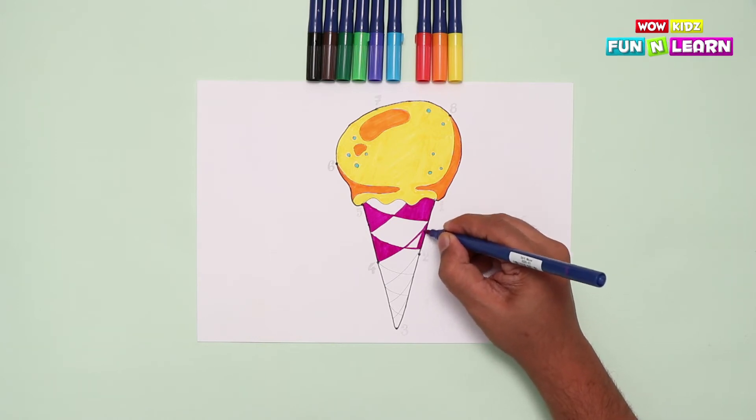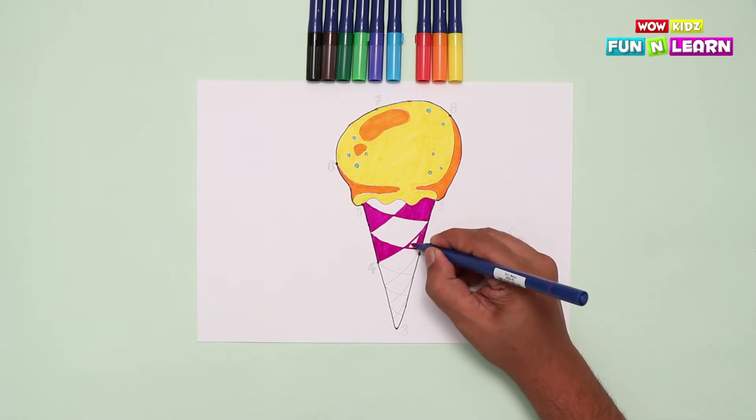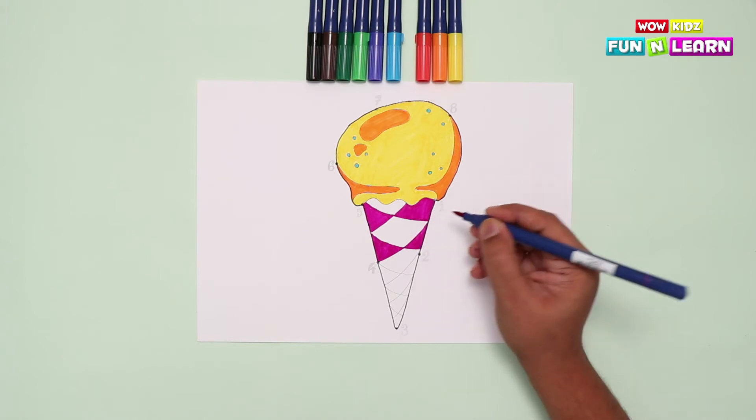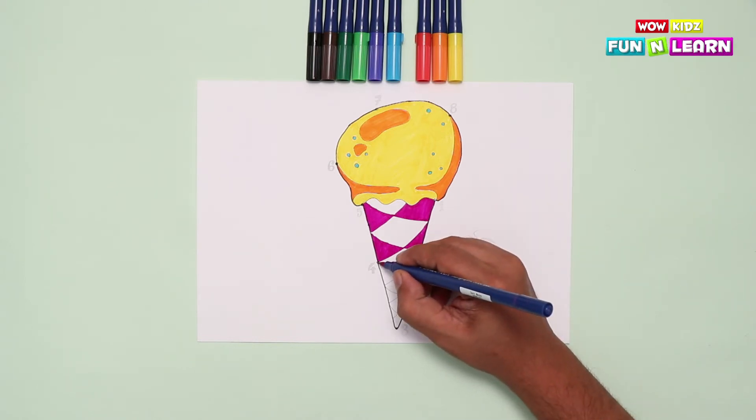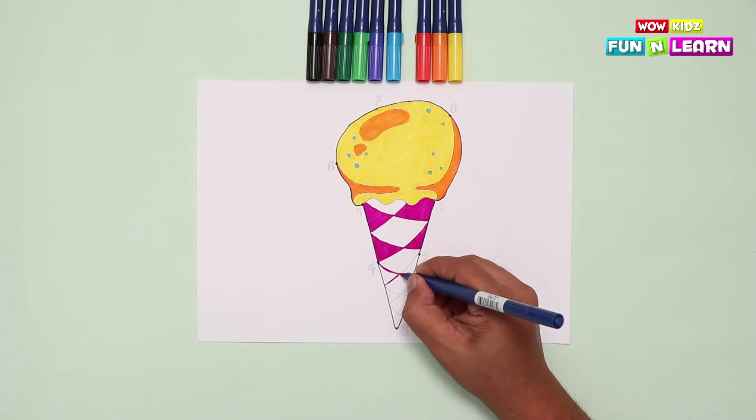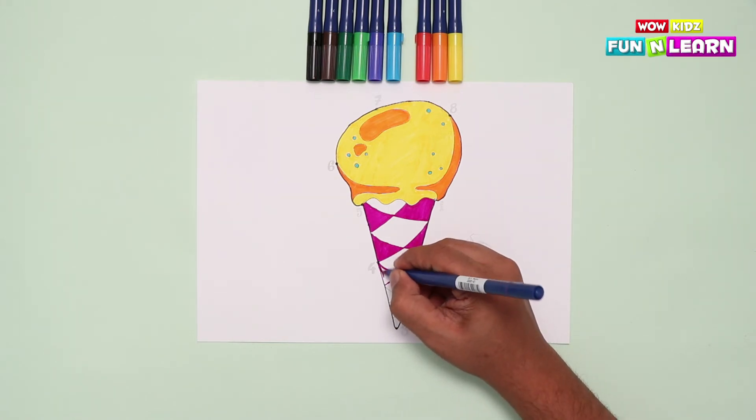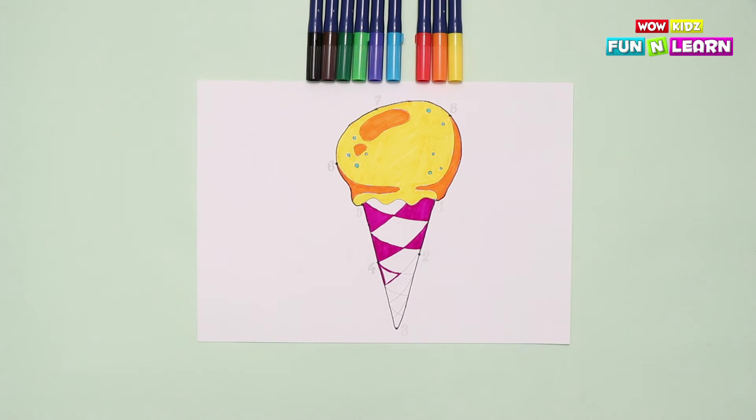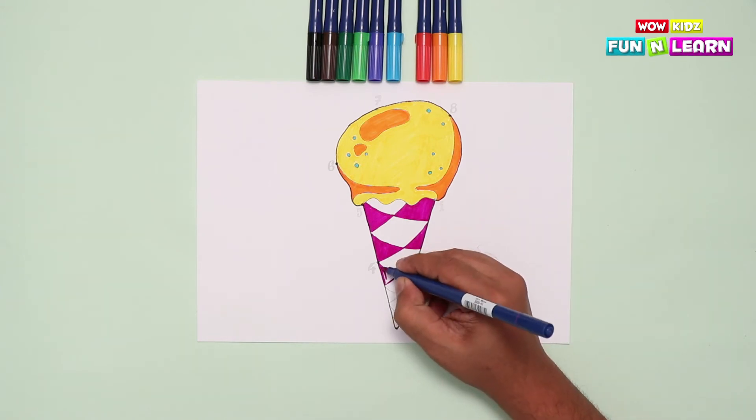The opposite one. Moving on to the next alternate section. Drawing the edges first. And then filling in the color. Like this. And the opposite one.